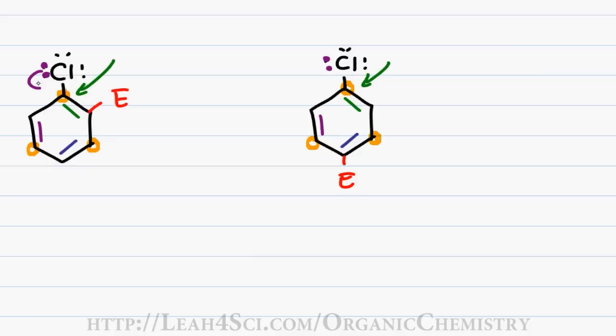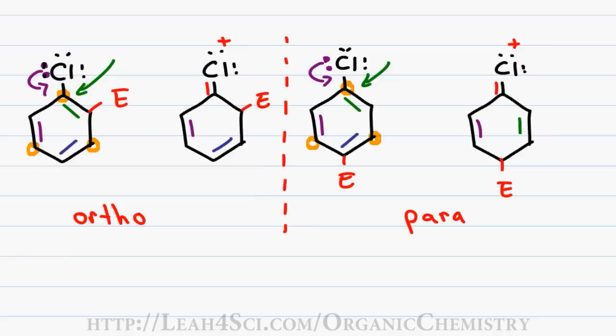I drew out the resonance intermediates for the bonus structure in both the ortho and the para position. Notice that in both cases chlorine is pi-bound to the carbon in the ring and chlorine has a positive charge. Other electronegative atoms like nitrogen and oxygen are capable of holding that charge and that bonus resonance helps move that reaction along. But halogens because they're so highly electronegative really dislike that charge and that will slow down the reaction.